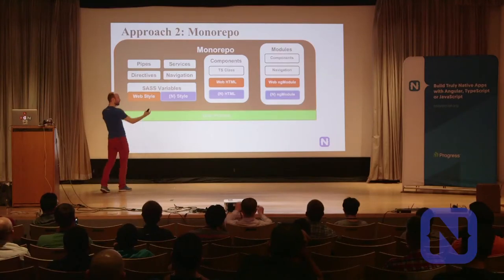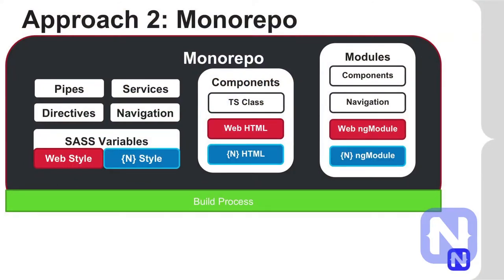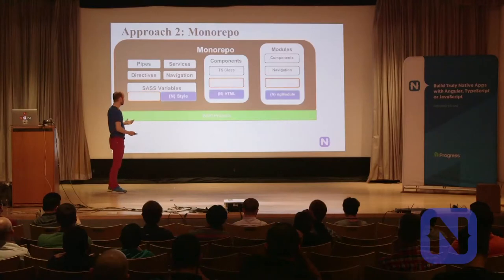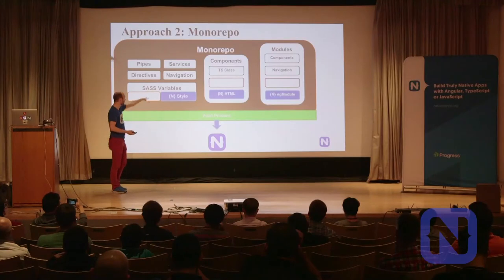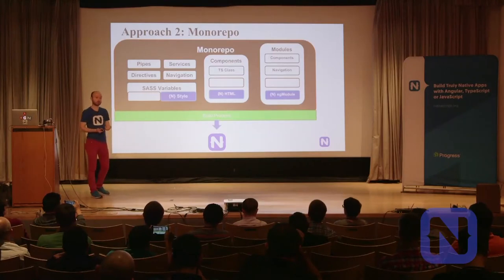To make sense of the monorepo, you need some sort of build process. If you want to build an Angular web app, you exclude the NativeScript files, pull just the common ones, and generate a web application. Or you exclude the web-specific files, pull the NativeScript ones, and generate the NativeScript project. That's pretty much the concept of having a monorepo.